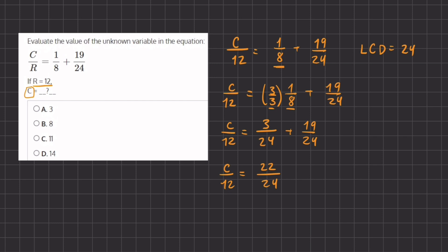Now before we multiply this 12 on both sides, we can simplify the right hand side, this 22 over 24, and it might make things easier. So we have c divided by 12 equals 22 divided by 24. We can divide evenly by 2. So 22 divided by 2 gives us 11, and 24 divided by 2 gives us 12.